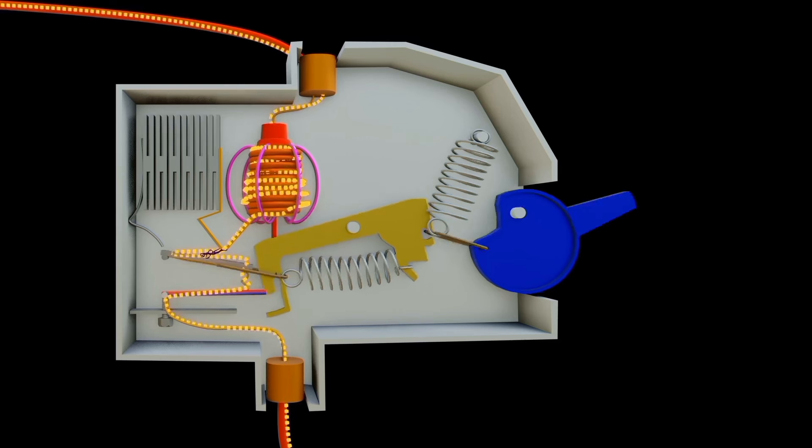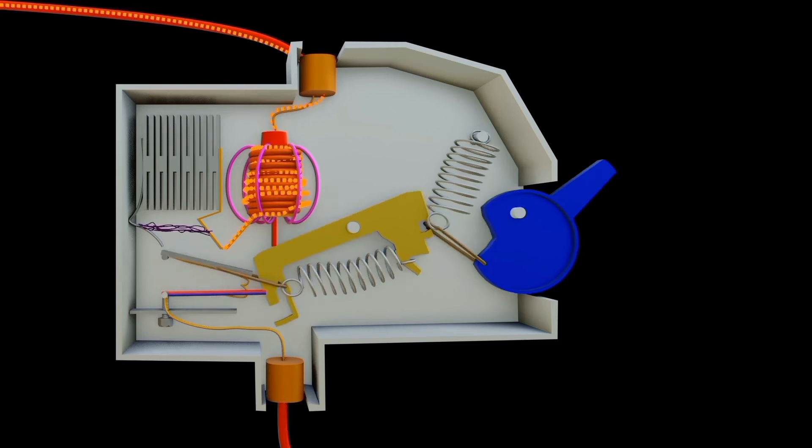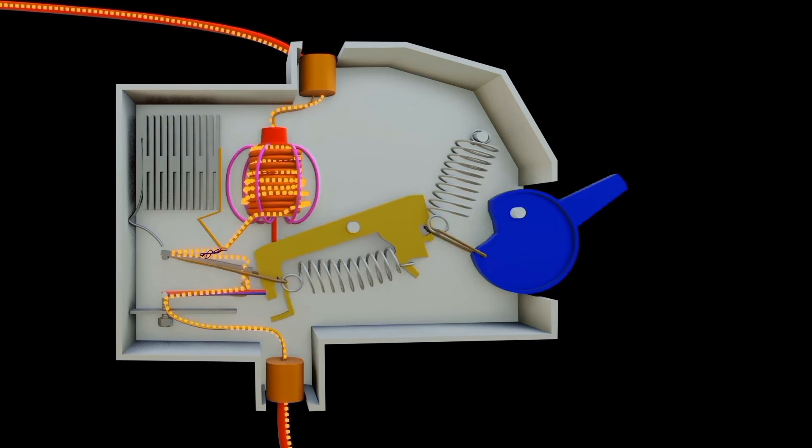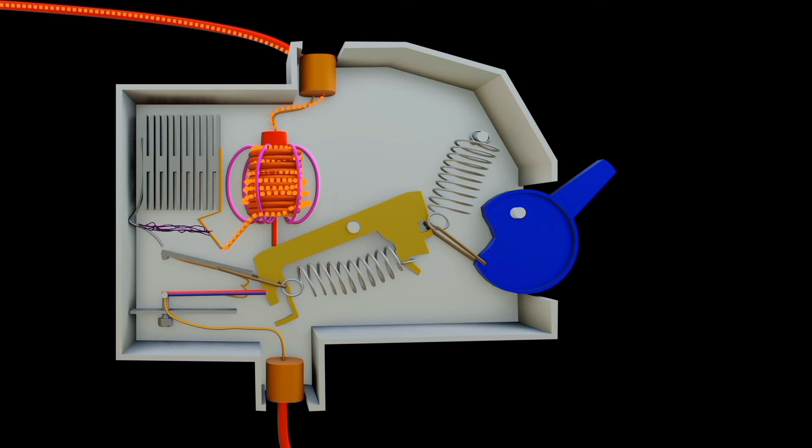The arc chamber is designed to cool and lengthen the arc. It often contains materials that assist in deionizing and cooling the arc. The arc chamber typically incorporates materials like copper or other alloys with good thermal conductivity. These materials aid in dissipating the heat generated by the arc, helping to cool and extinguish it.